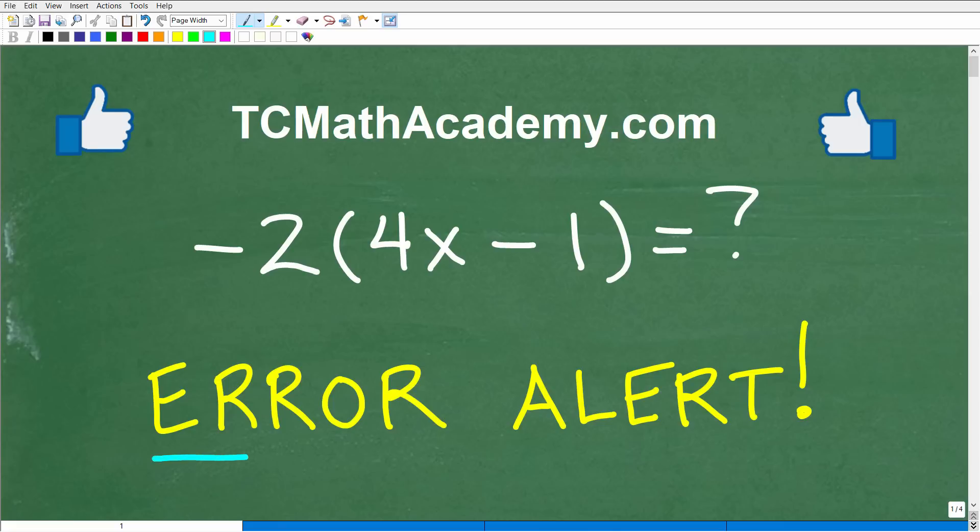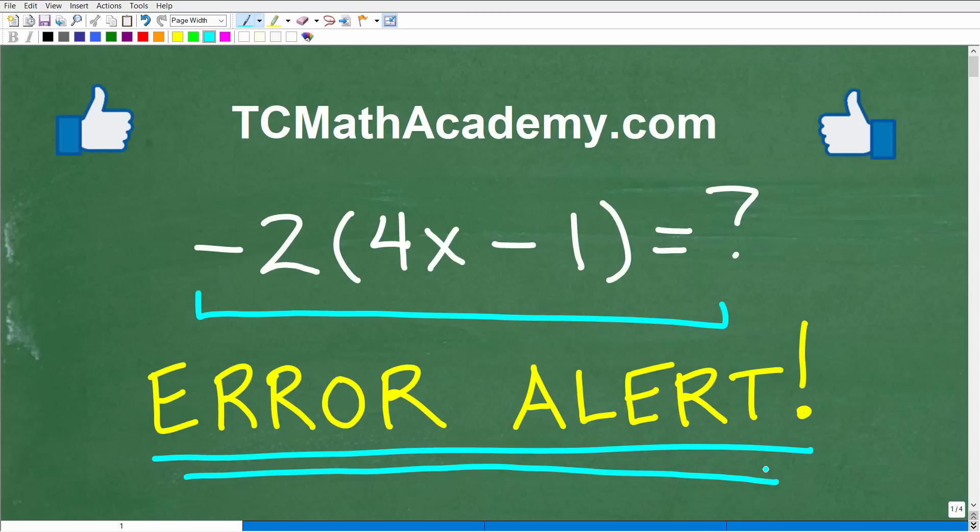Okay, let's talk about a super common algebra error. You definitely want to be on alert when you see a situation like this in algebra. But before I show you this error and how to avoid it, I want to ask you if you can simplify this situation. Here we have negative 2 times 4x minus 1. What is this equal to?